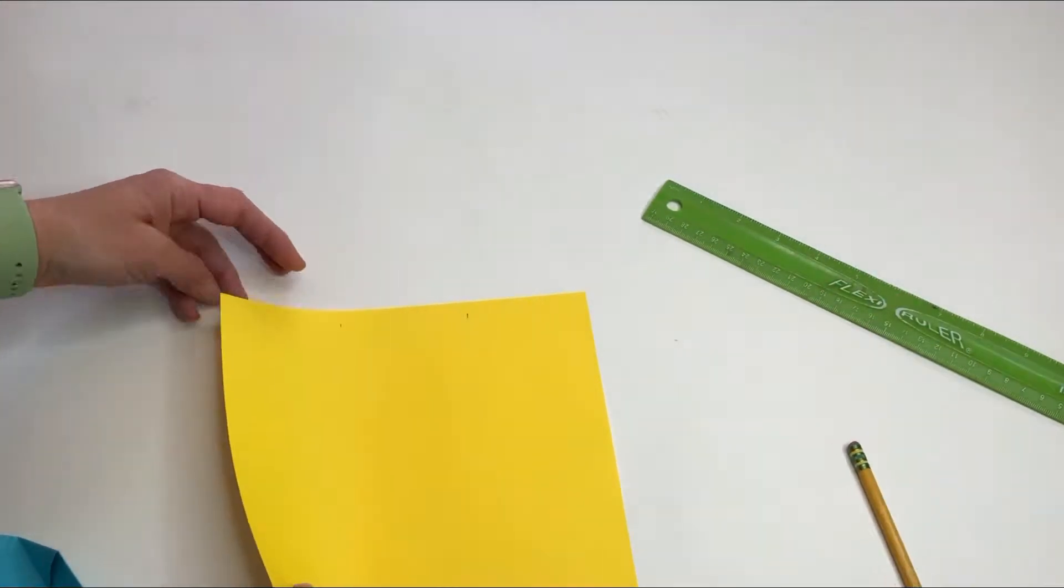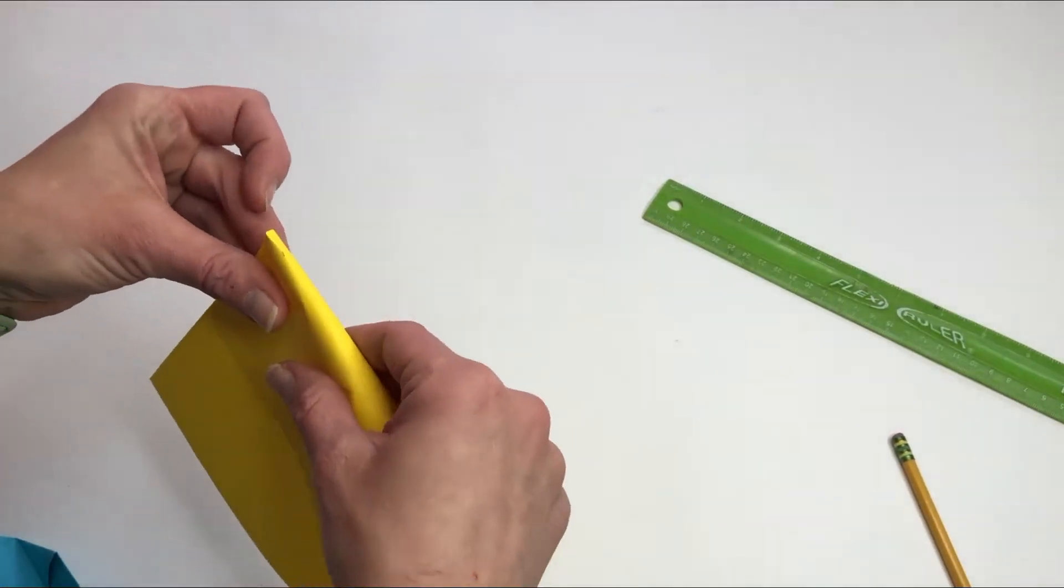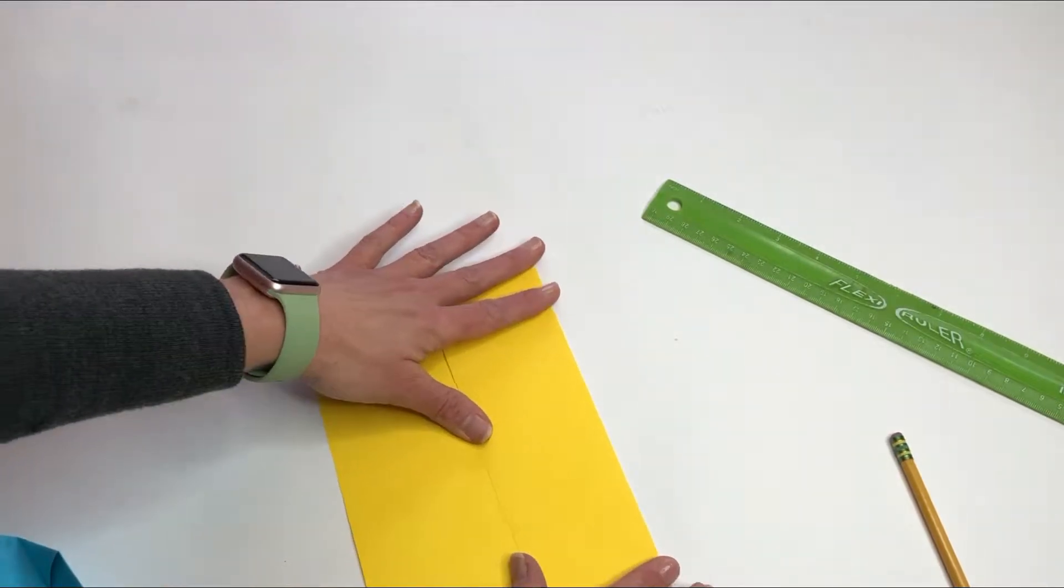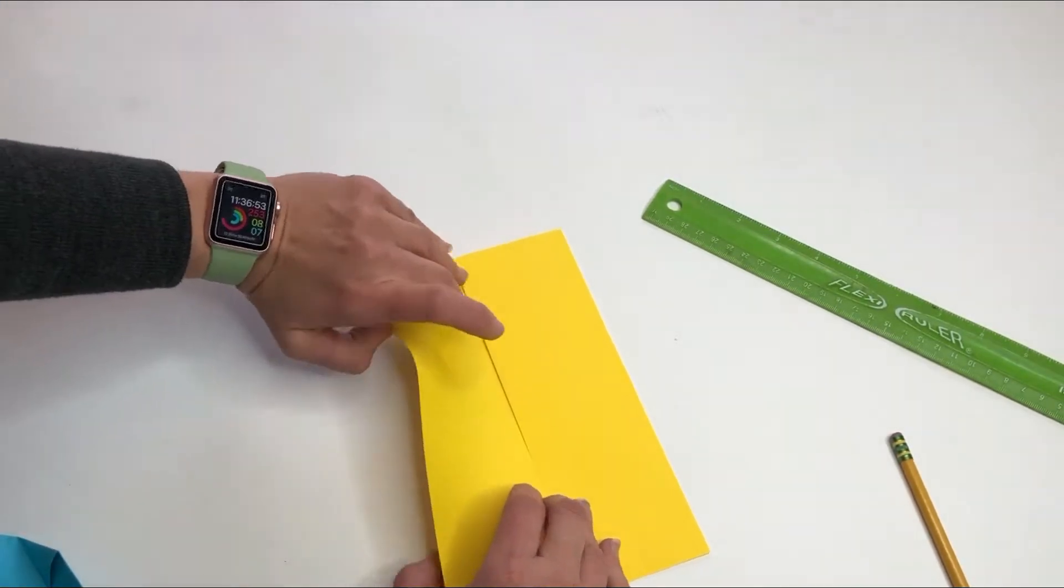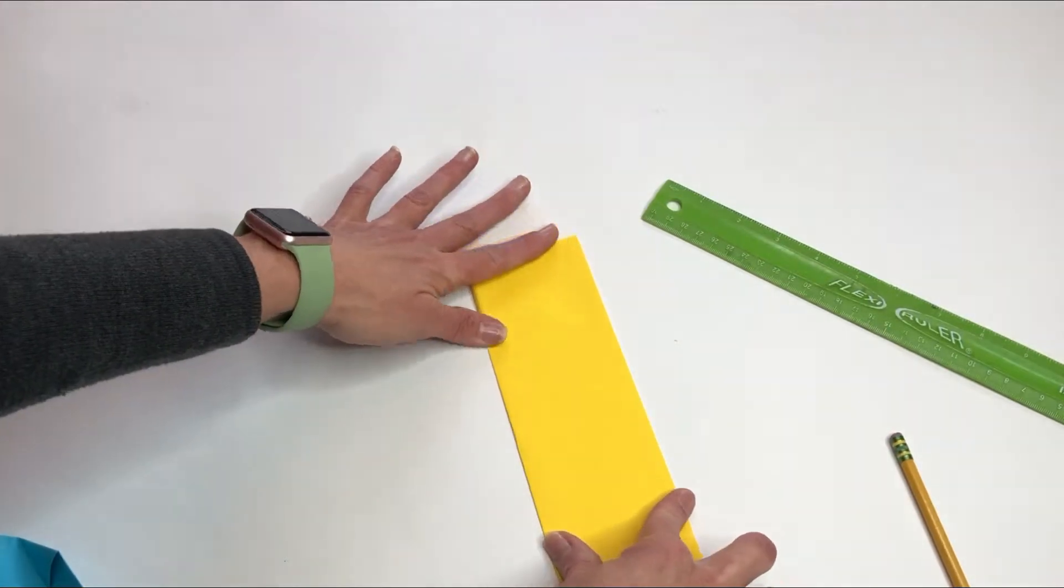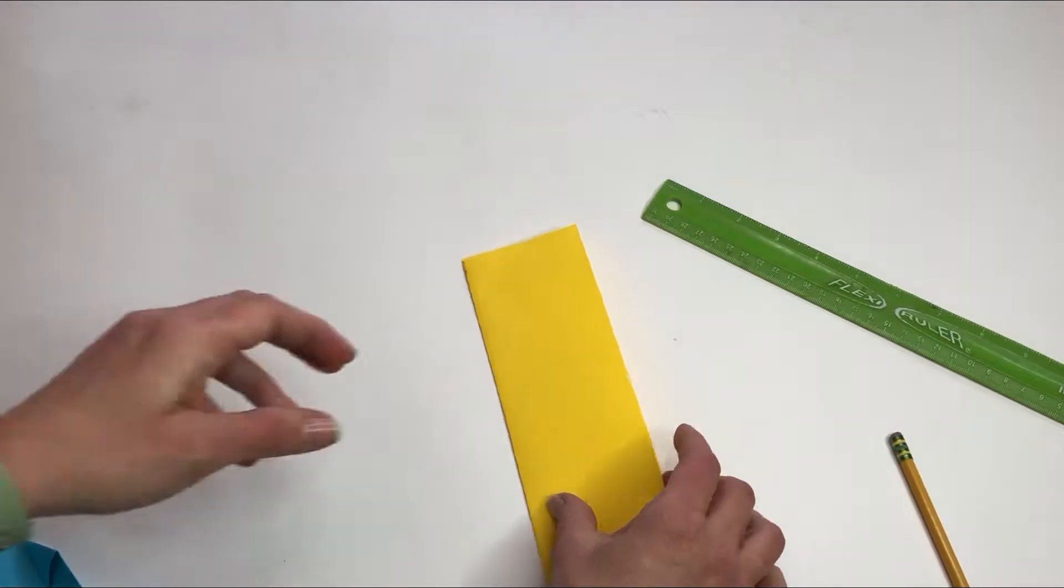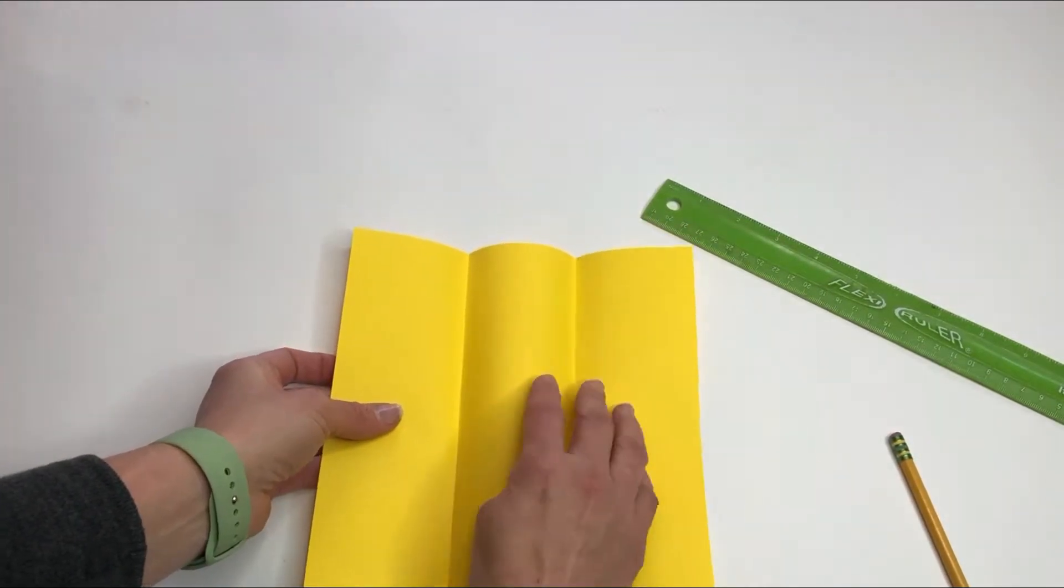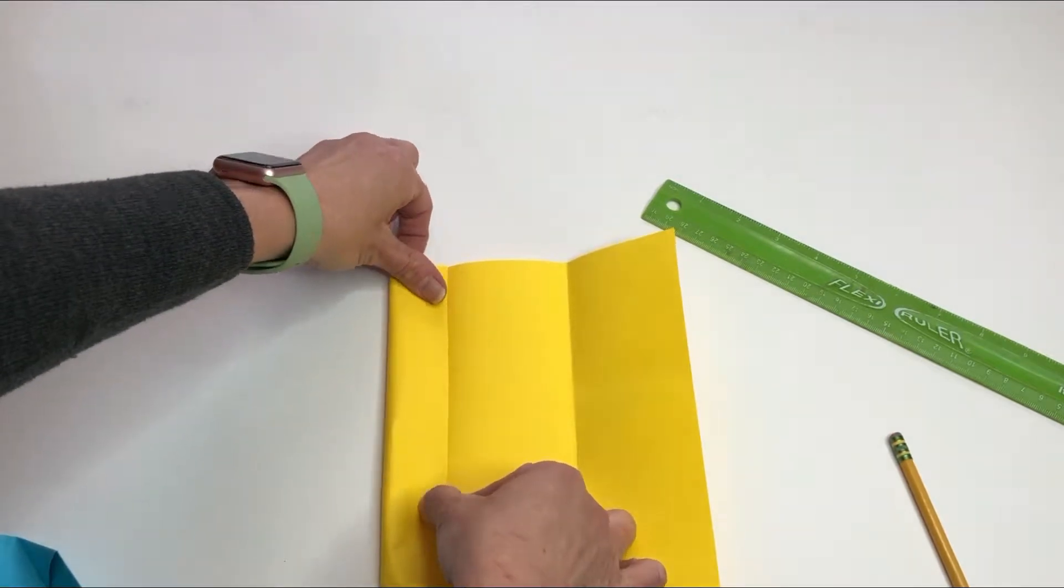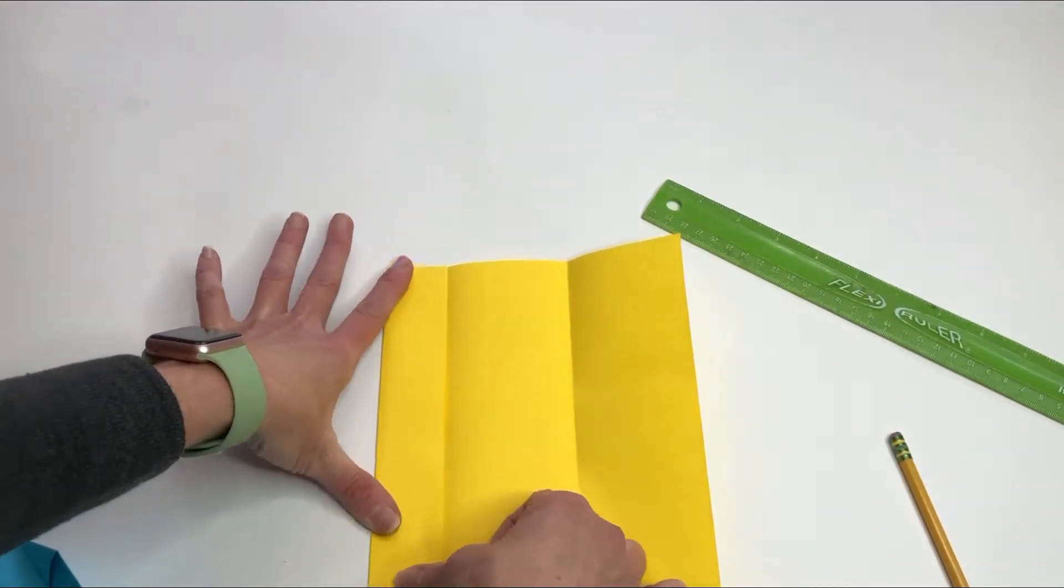Fold them both into that point. The next step, unfold it and fold it into those lines right there that you just folded previously.